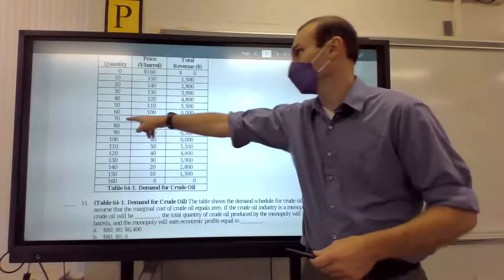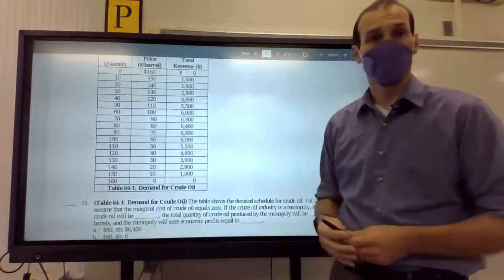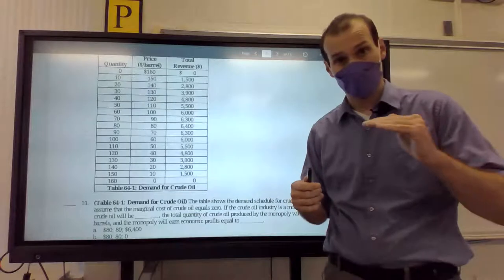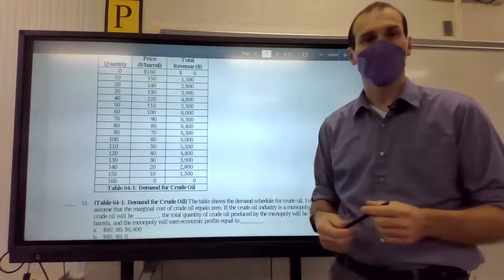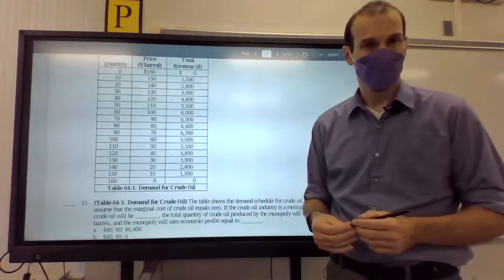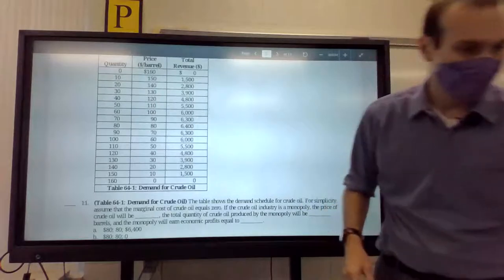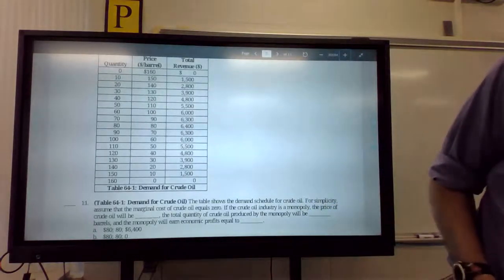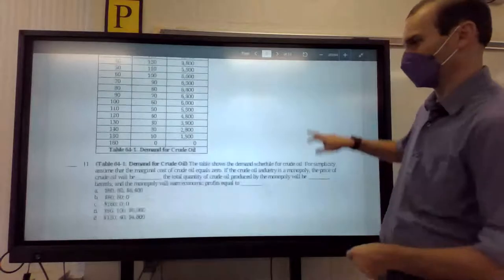The price will be 80. The quantity, I'm sorry, price will be 80. The quantity will be 80. And the total revenue, which is total profit, zero cost monopoly, is going to be $6,400. All right. Let's go ahead and move on to number 13.